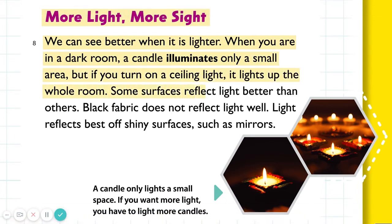Some surfaces reflect light better than others. Black fabric does not reflect light well. Light reflects best off shiny surfaces such as mirrors. A candle only lights a small space. If you want more light, you have to light more candles.